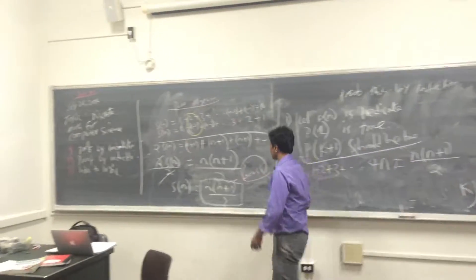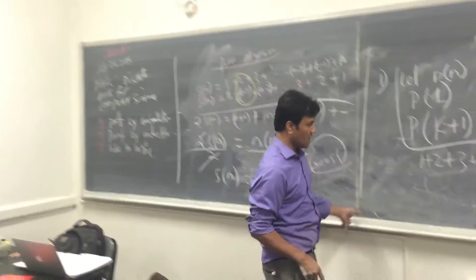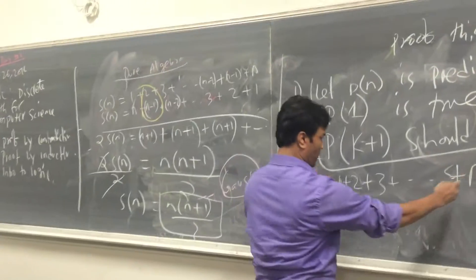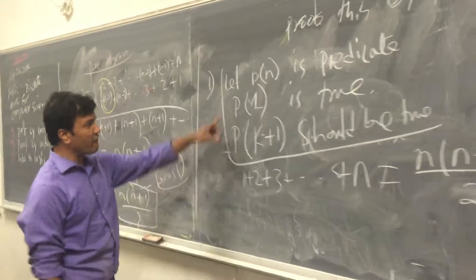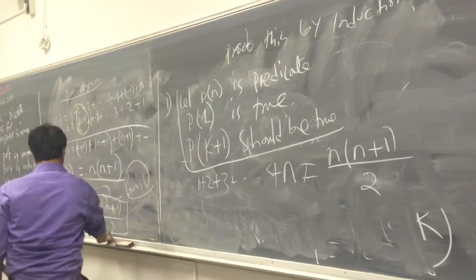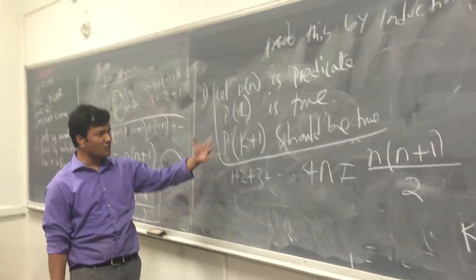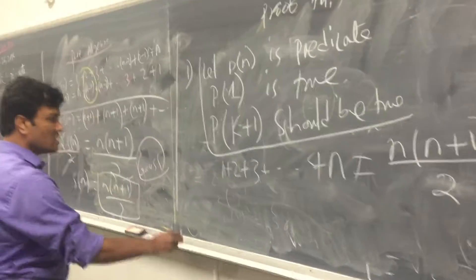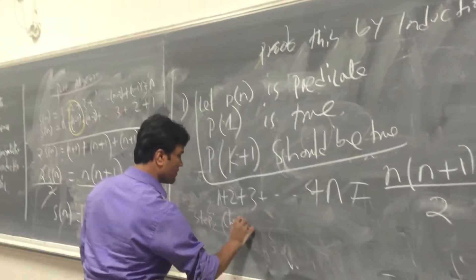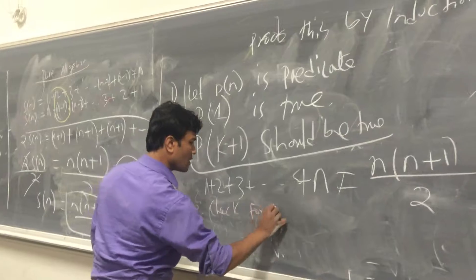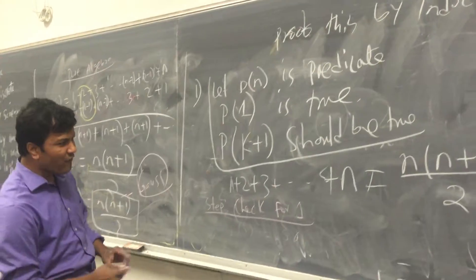We want to prove the equation that Gauss created. We're going to prove it by induction. What are we going to do? We're going to check for n equals 1. If it works for 1, then we're going to do the next step — we're going to do it for k plus 1. So step 1: check for n equals 1.